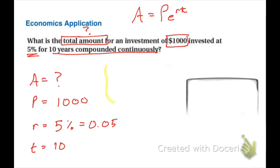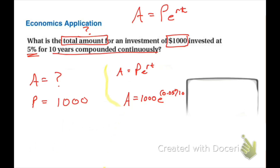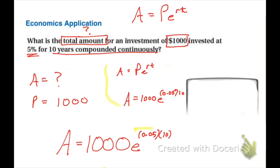The second thing we need to do is write down our formula with the information filled in. Using APERT, we get A equals 1000 times E raised to the exponent 0.05 times 10. So the exponent on E is 0.05 times 10.